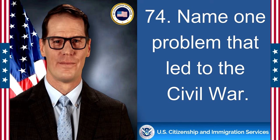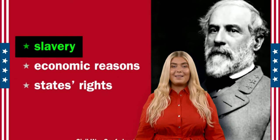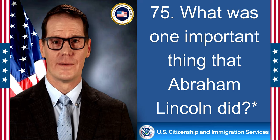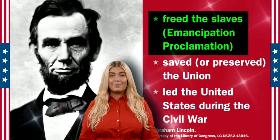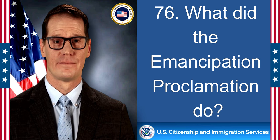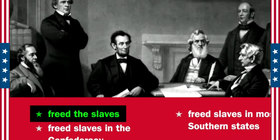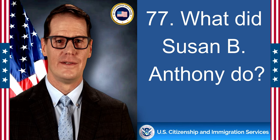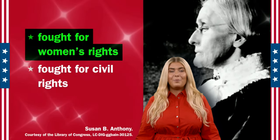Name one problem that led to the Civil War. Slavery. What was one important thing that Abraham Lincoln did? Freed the slaves — Emancipation Proclamation. What did the Emancipation Proclamation do? Freed the slaves. What did Susan B. Anthony do? Fought for women's rights.